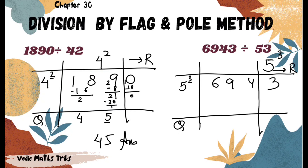We start by dividing 6 by 5: it goes 1 time (5×1=5), giving a remainder of 1. We write the remainder 1 alongside the next digit 9, making 19. We multiply the quotient digit 1 by the flag 3: 1×3=3, and subtract 3 from 19, giving 16. The next divisor is 16.